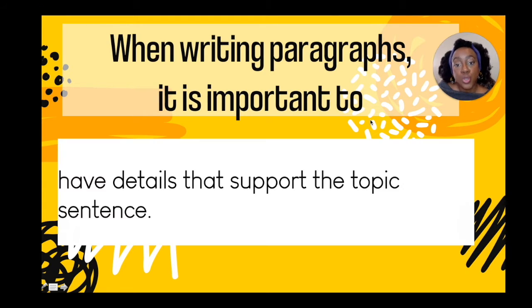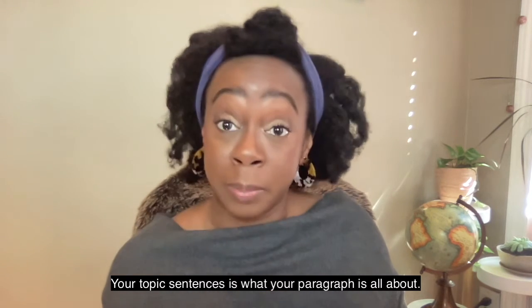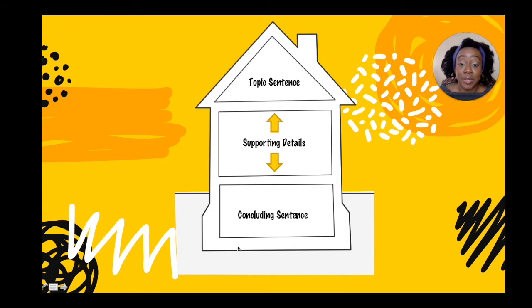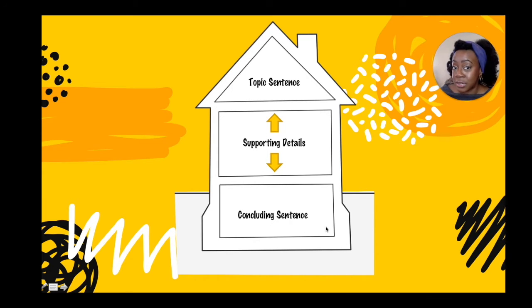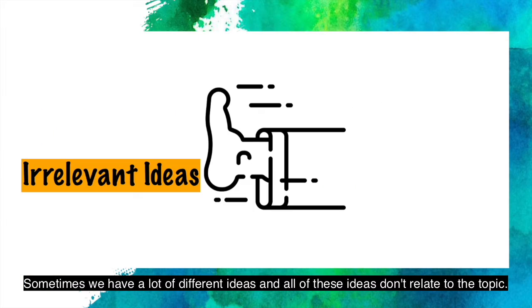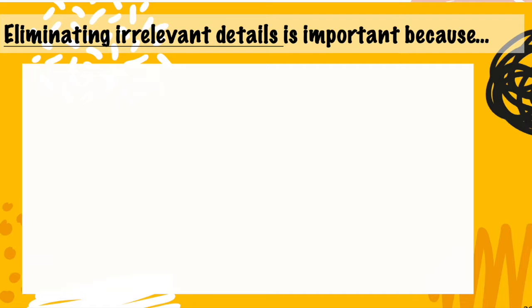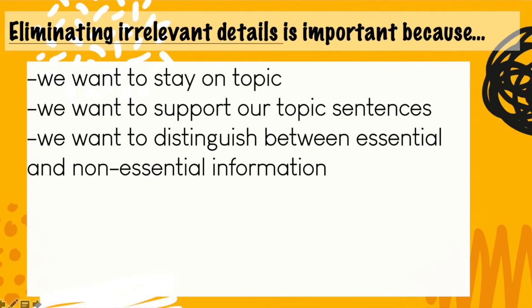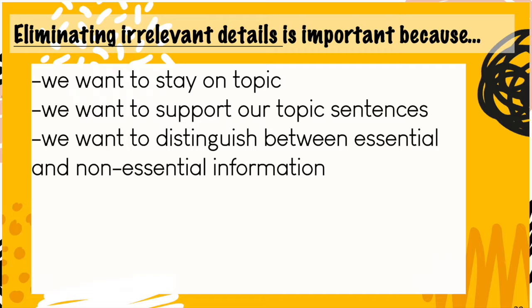When you're writing paragraphs, it is important to have details that support the topic sentence. Your topic sentence is what your paragraph is all about. I liken it to this drawing of a house — the roof at the top, support beams in the middle, and the foundation at the bottom. So your roof is your topic sentence, held up by supporting details, and the concluding sentence is the foundation.